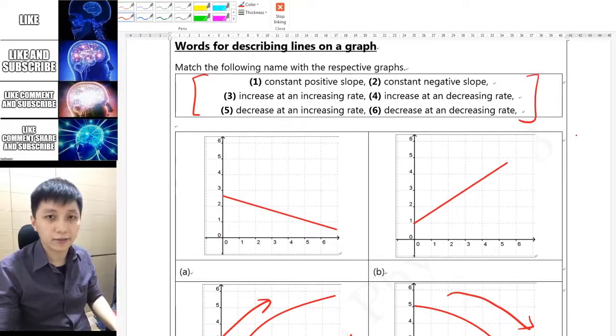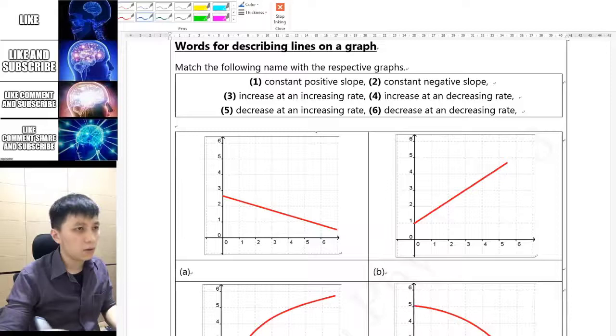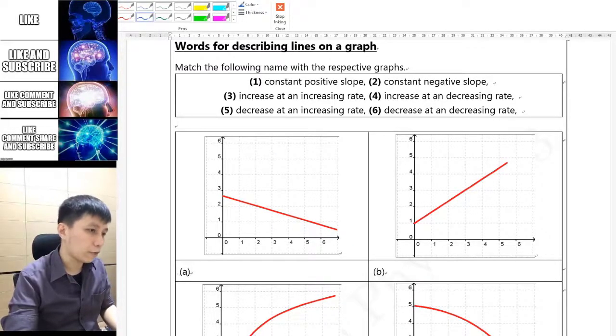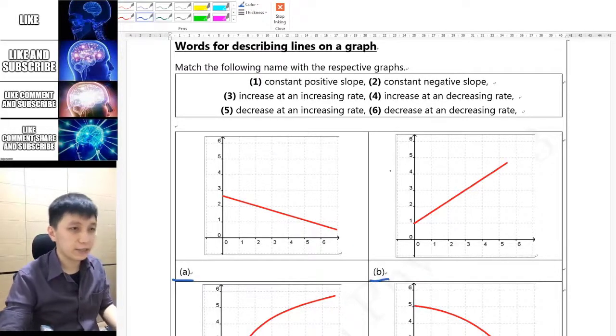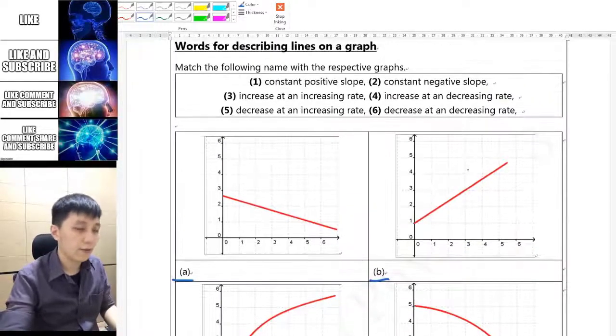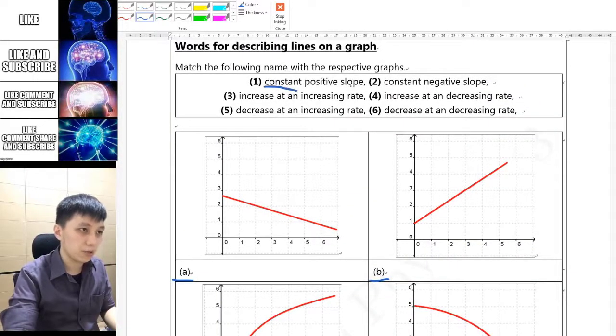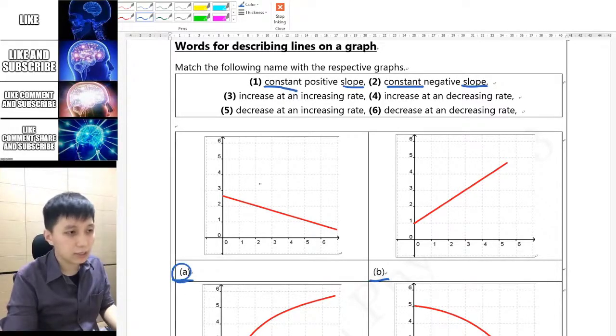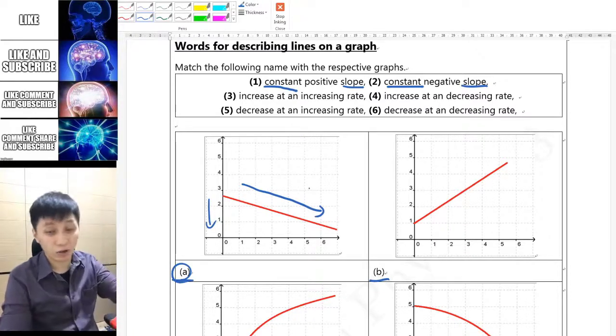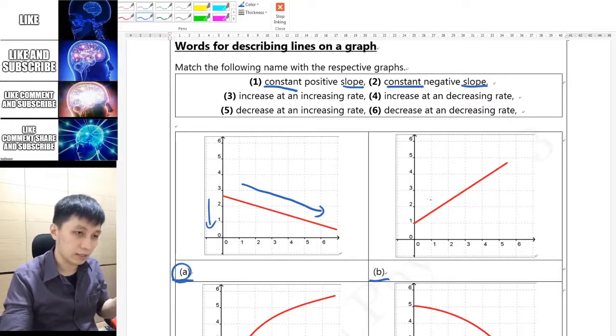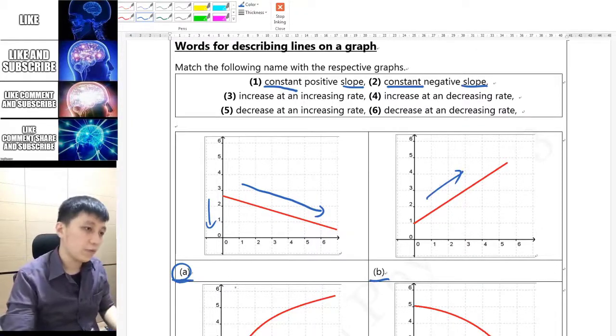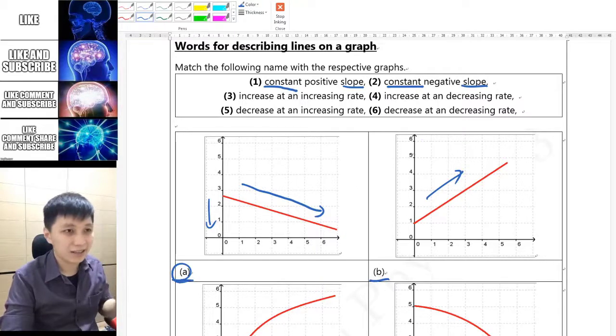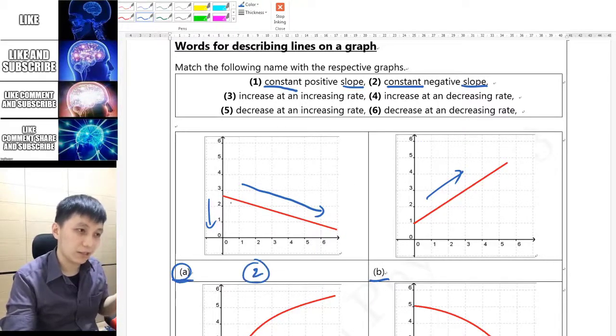All right, let's check the answers. For the first two, A and B, obviously they are the only straight lines that you have and they would be constant slope for sure. For A you can see that the number is actually decreasing along Y and we call it down slope, you may call, and the other one B is going to be up slope.